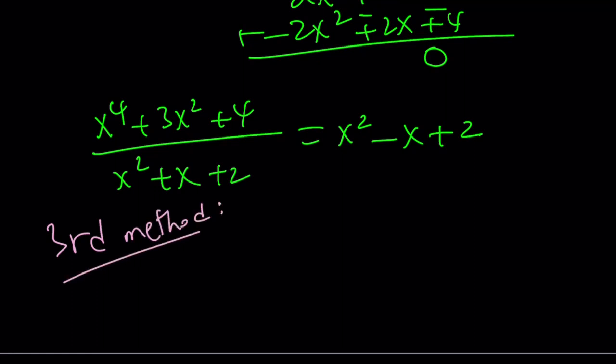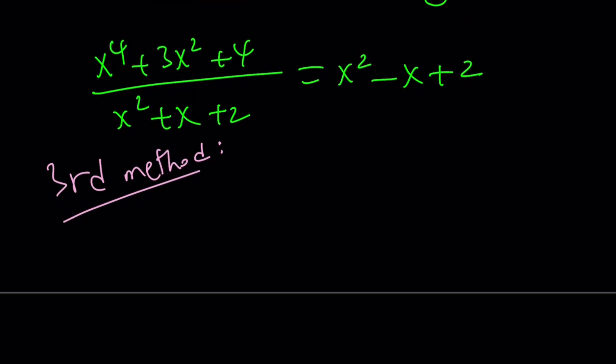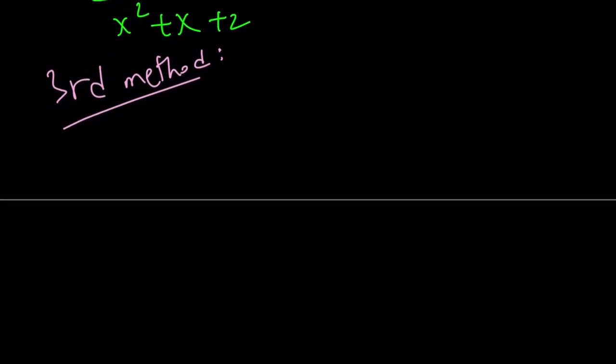And obviously, almost all the time, right? If there are three methods, of course, the third method is usually the easier one or it involves a trick, right? So how do we simplify this? So since the top is divisible by the bottom, why not try to factor x to the 4th plus 3x squared plus 4? That's a really nice polynomial, by the way.